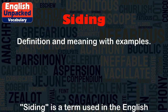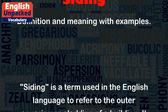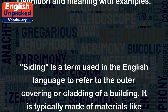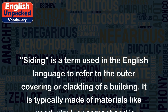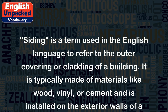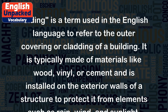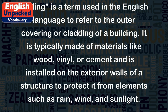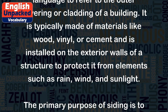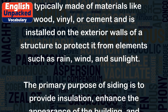Siding is a term used in the English language to refer to the outer covering or cladding of a building. It is typically made of materials like wood, vinyl, or cement and is installed on the exterior walls of a structure to protect it from elements such as rain, wind, and sunlight.